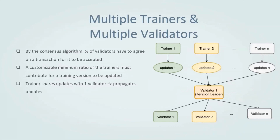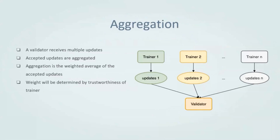Since our system can have multiple validators, they cannot always agree on the same decision regarding whether a transaction should be accepted or rejected. This is solved by the consensus algorithm: two-thirds of the validators have to agree on a transaction for it to be accepted. Since our system also supports having multiple trainers, we use a customizable minimum ratio of trainers that must contribute before a new model is created. In Exonym, a trainer shares its updates with a single validator that then propagates these updates to the rest of the validators in the network. Since a validator can receive multiple updates from different trainers, these are combined through aggregation — the weighted average of the accepted updates — where the weight of a trainer is determined by its trustworthiness.